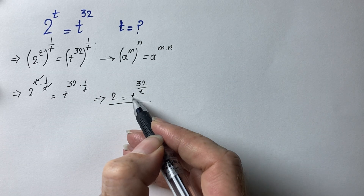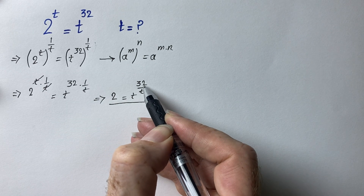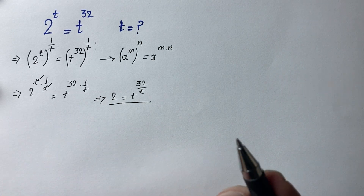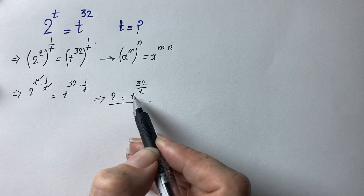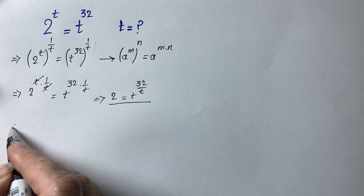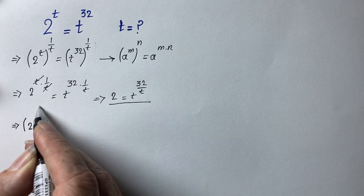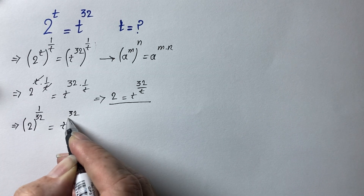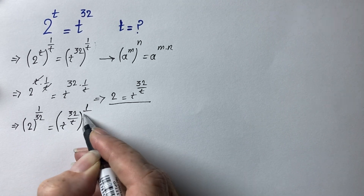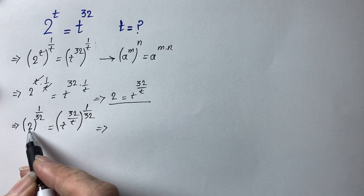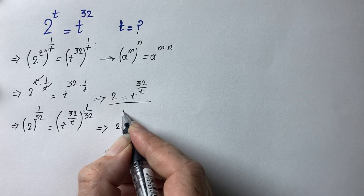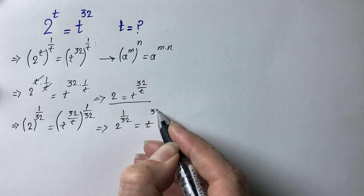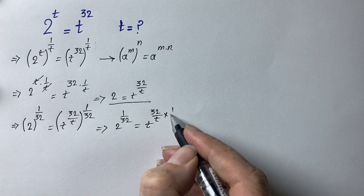Now we have variable terms on one side. I'm going to remove 32 from the right side by raising both sides to the power of 1 over 32. Left side: 2 raised to the power of 1 over 32. Right side: t to the power of 32 raised to the power of 1 over 32, which gives t to the power of 1 — the 32's cancel.